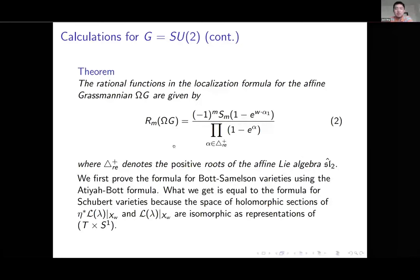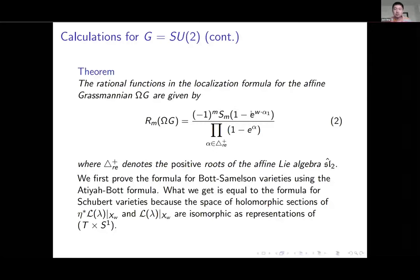Here we have our theorem. The rational functions in the localization formula for ΩG are given by: in the denominator, we have this product over all positive roots of the affine Lie algebra sl₂. On top, we have a signed quantity involving this S_m. We have this extra term with each of the w_m applied to α₁. The word with length m applied to this simple root here.